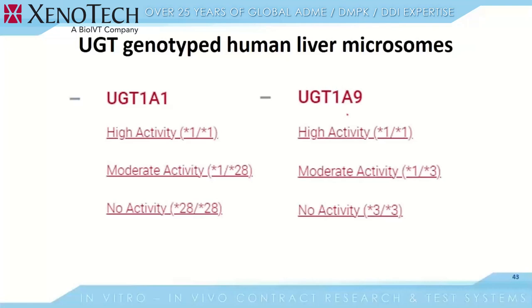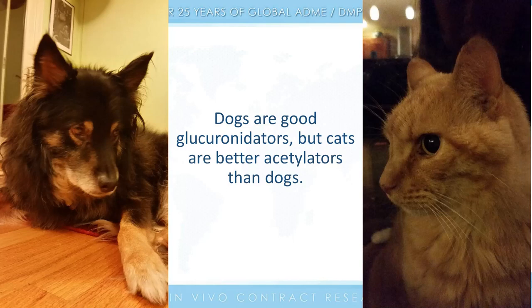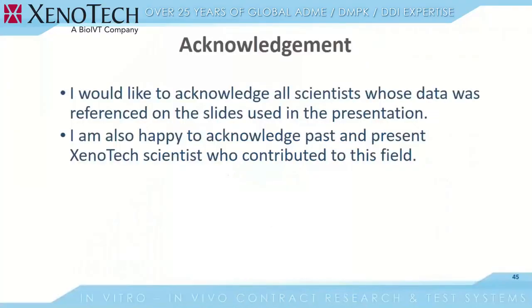This essentially completes the scientific content of the presentation. In closing, I would like to acknowledge all scientists whose data was referenced on the slides and used in this presentation, as well as past and present Xenotech scientists who contributed to this field. On a lighter note: dogs are good glucuronidators, but cats are better acetylators than dogs — and additionally, you can support one of each.